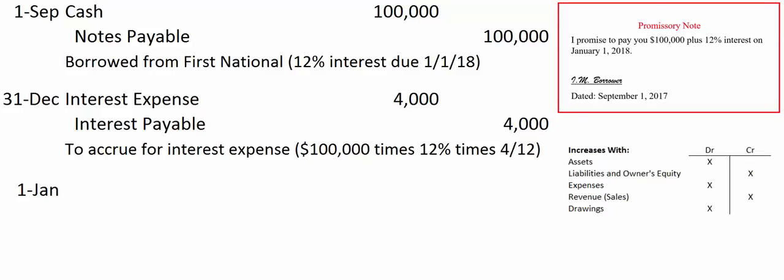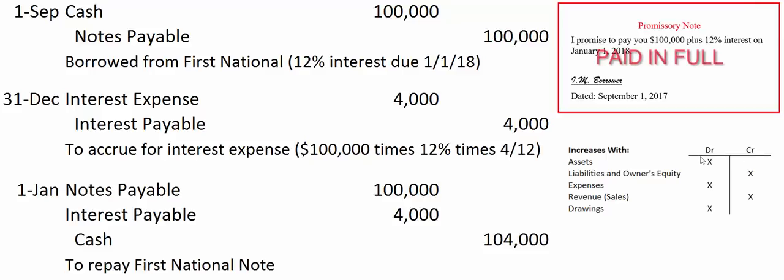Now it's January 1st — time to repay the loan. We owe $100,000 in principal and $4,000 in interest. Notes payable is a liability account with a credit balance of $100,000; to zero it out we debit it for $100,000. Interest payable had a credit of $4,000; to zero it out we debit interest payable for $4,000, and we write a check for $104,000.